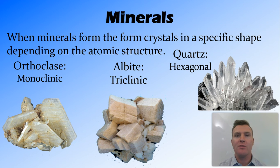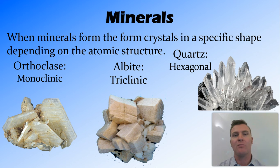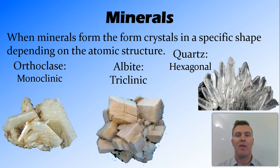Minerals also form crystals that have a specific shape, and this specific shape comes from that specific atomic structure mentioned earlier. So orthoclase is monoclinic, albite is triclinic, and quartz is hexagonal. There are seven different crystal systems — seven different shapes that crystals can form — and pretty much all crystals can fit into those shapes in some way or another.